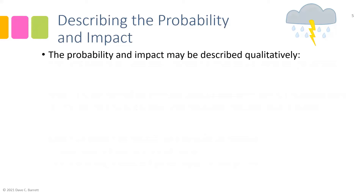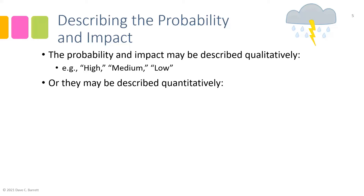Probability and impact may be described qualitatively, which is the more common approach. As I was expressing just a moment ago, qualitative description means we say things like high, medium, low, likely, unlikely, very likely — those are qualitative, more or less subjective descriptions of probability and impact. Or they may be described quantitatively, such as a 10% probability or a $10,000 impact. That's a quantitative way of describing probability and impact.